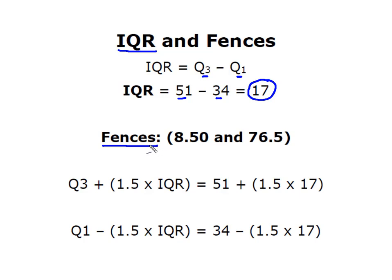I need an upper end and a lower end. So to find my upper fence, I'm going to take Q3 and I'm going to add one and a half times the IQR to it. So I knew that Q3 was 51, IQR was 17. Multiply that together and that gave me 76.5.